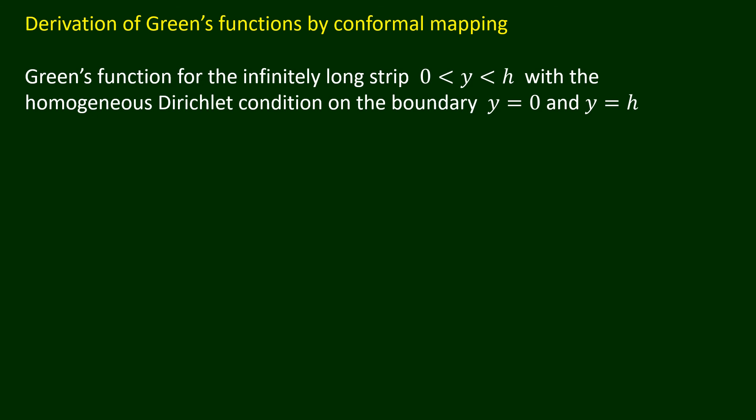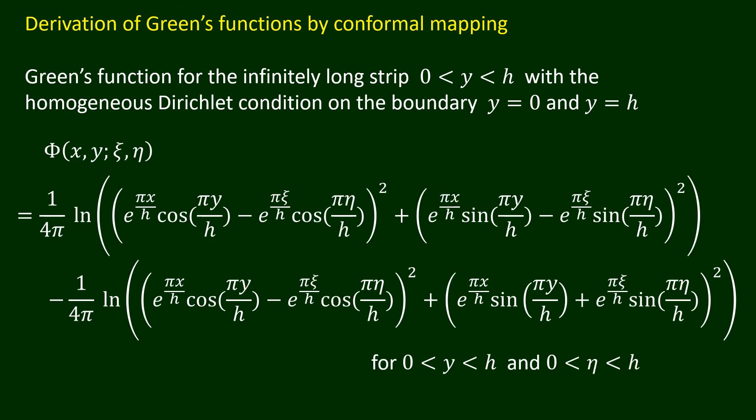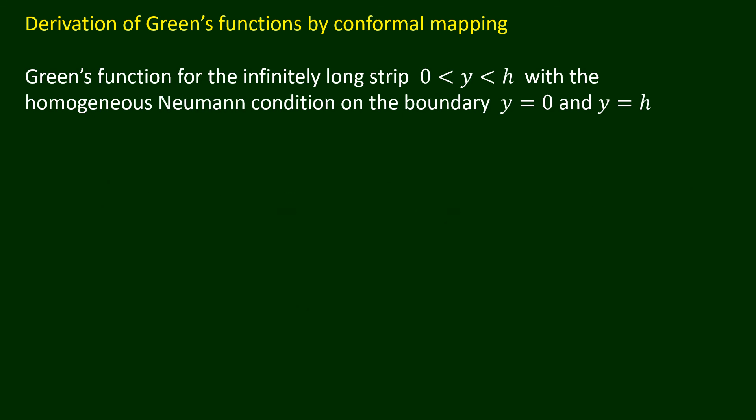Here is the derived Green's function for the infinitely long strip, y strictly greater than 0 and y strictly less than h, with the homogeneous Dirichlet condition on the edges y equals 0 and y equals h. In a similar way, we can derive a Green's function for the infinitely long strip with the homogeneous Neumann condition on the edges y equals 0 and y equals h.